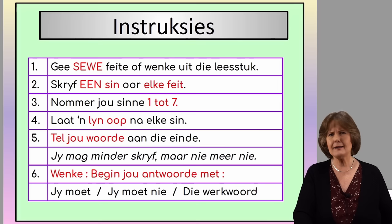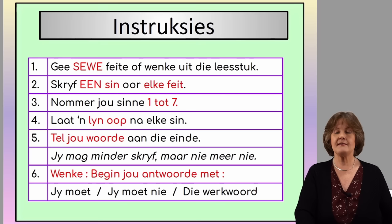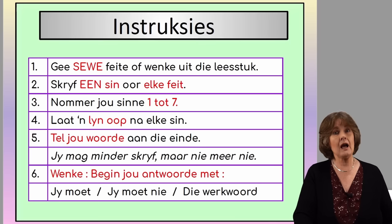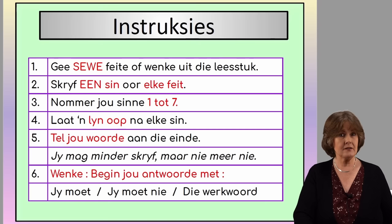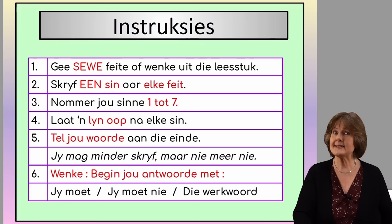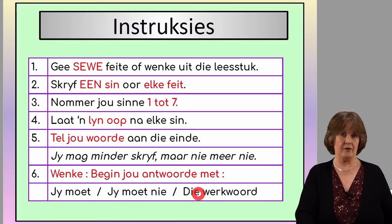When they ask you lastly for venke, a venke is an instruction or a suggestion. So when at number one they want seven venke, that means you need to use a befelsen — you need to start your sentence with a command, or a suggestion, or an instruction. That means you need to start each sentence with 'Jey moet' or 'Jey moet nie' — you must or you must not — or the verb. You do that only when they ask you for suggestions.